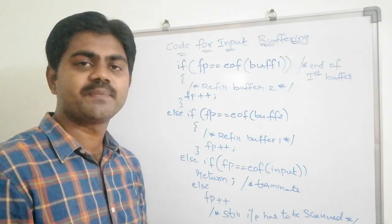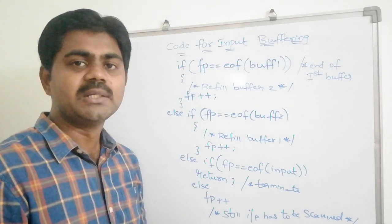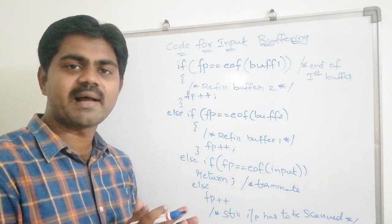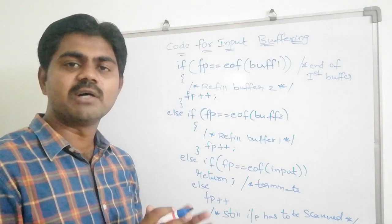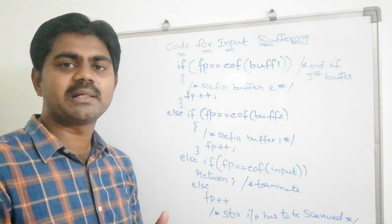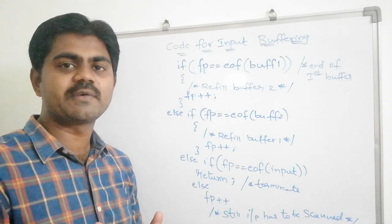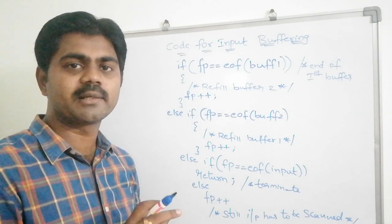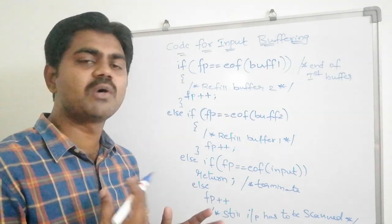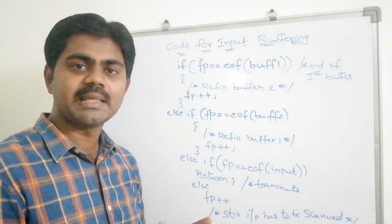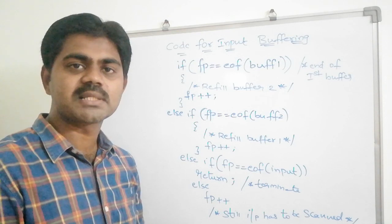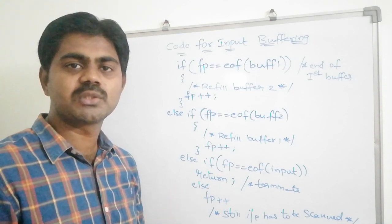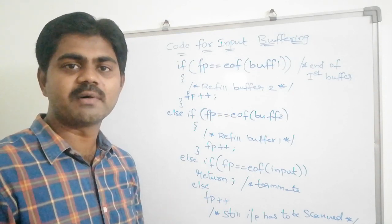Otherwise, FP gets incremented because the input still needs to be scanned. So: buffer 1 receives input, at EOF we go to buffer 2, at EOF of buffer 2 we check whether more input is available, and if the input is also over we terminate our process. This is input buffering — I hope you understood.